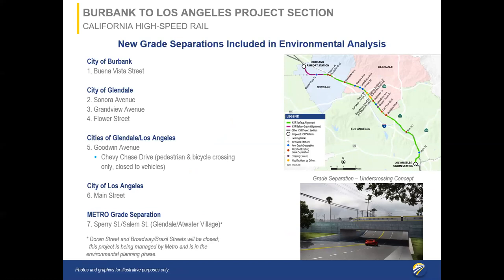A grade separation is a roadway realigned over or under the train tracks to eliminate hazards. Benefits of grade separations include improving safety by eliminating conflicts between trains, vehicles, and pedestrians; increasing train speeds since they are separated from auto and pedestrian traffic; improving operational reliability; reducing noise because trains do not sound horns at intersections; decreasing traffic congestion; and reducing greenhouse gas emissions since vehicles don't idle waiting for approaching trains. Grade separations being cleared include Buena Vista Street in Burbank; Sonora Avenue, Grandview Avenue, and Flower Street in Glendale; Goodwin Avenue/Chevy Chase Drive; and Main Street in Los Angeles.